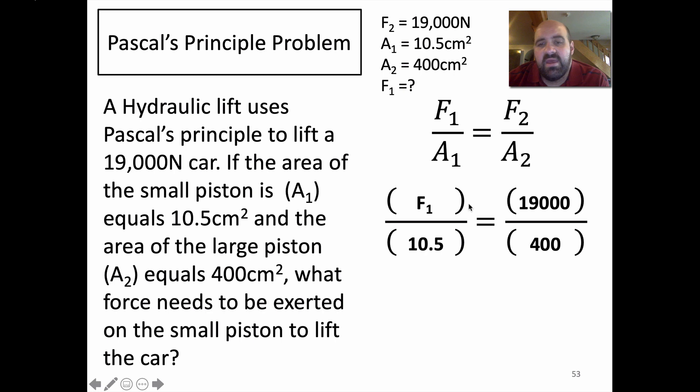Again, we're going to cross multiply. We like cross multiplying. So, you have 400 times F₁ and that equals 19,000 times 10.5.